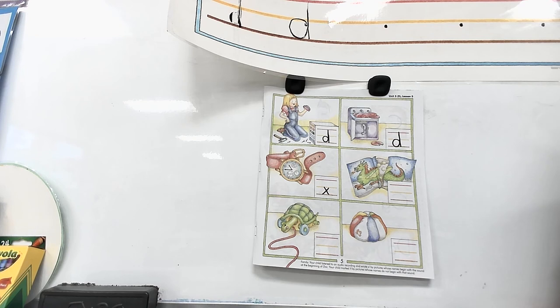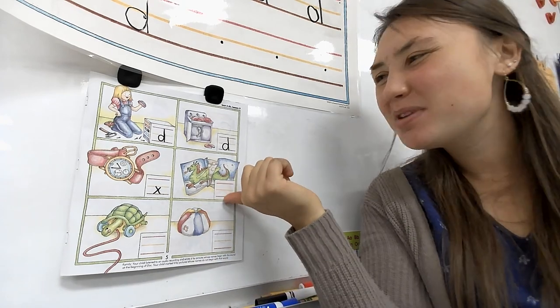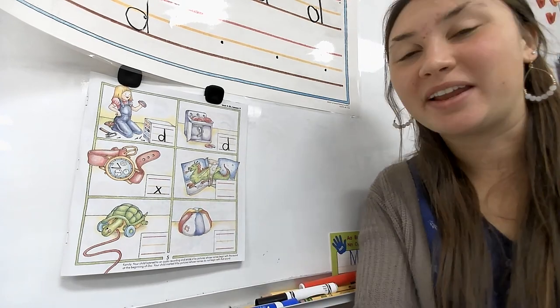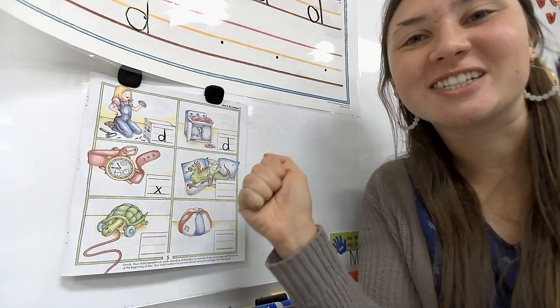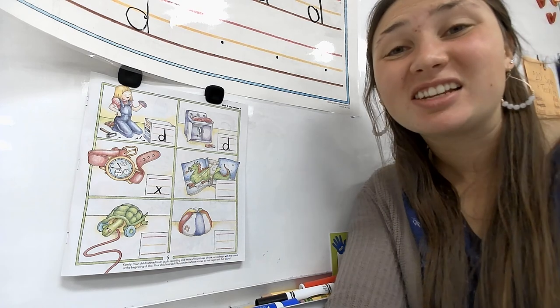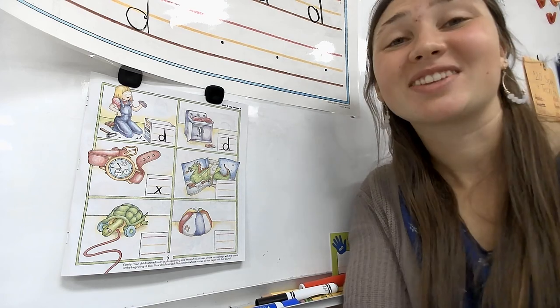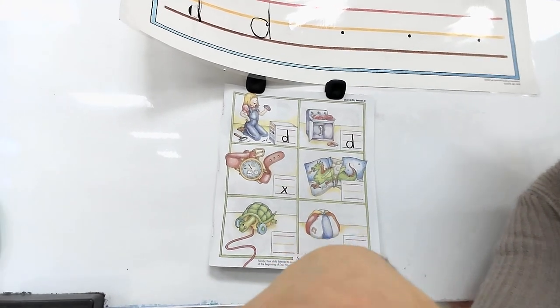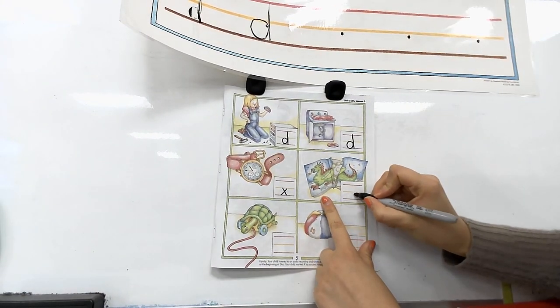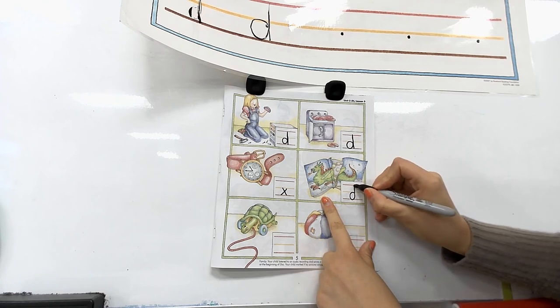Dragon. Does dragon begin with the sound d? If your answer is yes, write lowercase d on the lines next to the dragon book. If your answer is no, mark an x on the lines. All right, so let's sound out dragon together. Doc taped up his dragon book. How nice. Let's sound out dragon. My turn. D, D, dragon. Your turn. D, D, dragon. Does D, D, dragon start with D, D, the D sound? Yes, it does. Yeah, so make a lowercase d next to the dragon book that she taped together. Make a lowercase d in that spot.